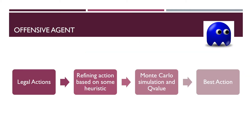Initially, the Pacman is going to find all the legal actions it can take at any given state. From these legal actions, it will remove those that lead more closer to the ghost or towards a dead-end alley. The refined action pool will only have those actions which take Pacman closer to the food or to the capsule.